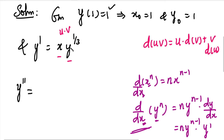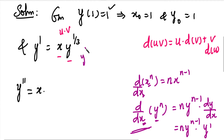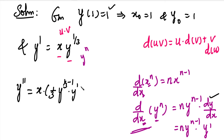We apply the u·v formula by differentiating. Taking u = x and v = y^(1/3), we differentiate to get x·(dv/dx) + v·(du/dx). This gives us the expression for y'' in terms of x, y, and y'.